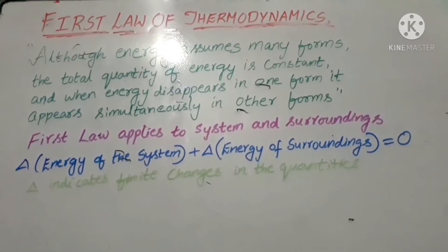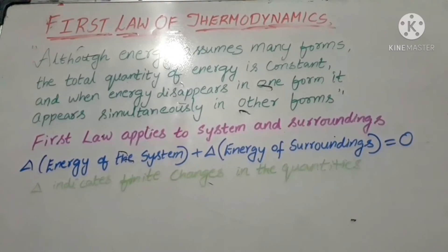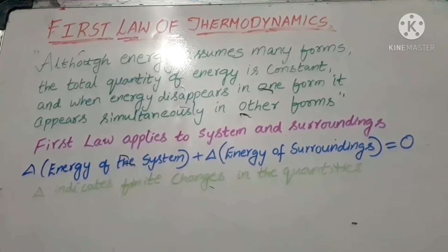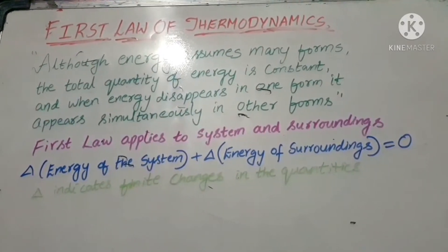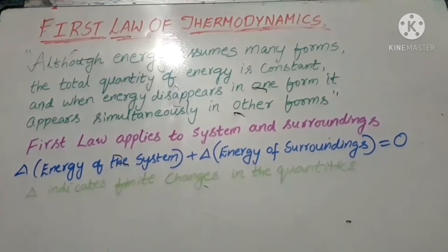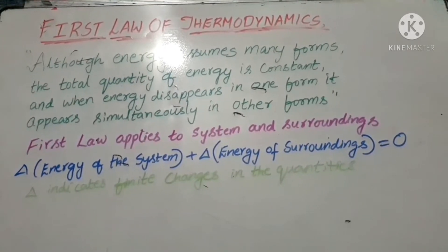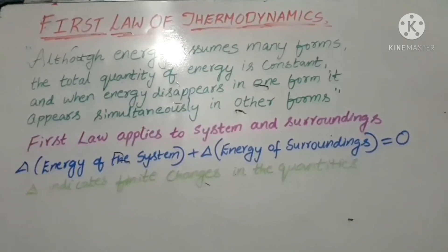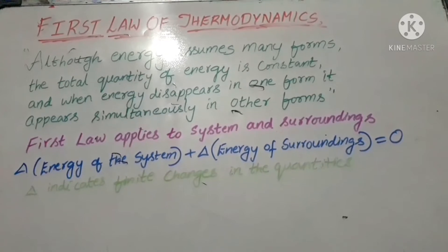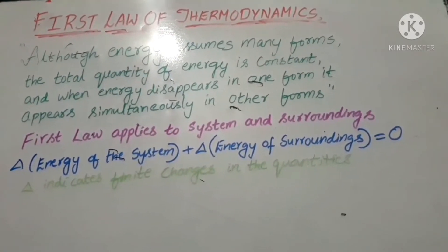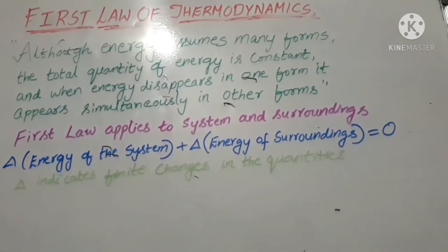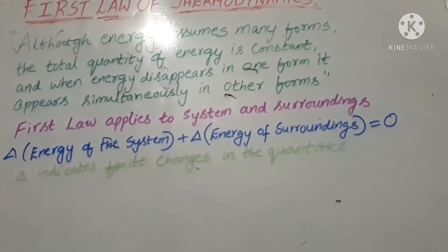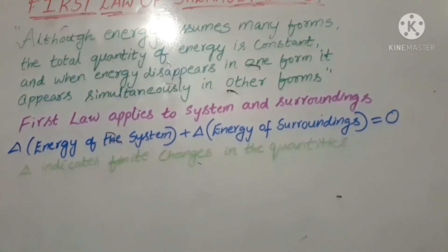Now we look at the first law of thermodynamics, which is a basic law in chemical engineering thermodynamics. The definition states: although energy assumes many forms, the total quantity of energy is constant, and when energy disappears in one form it appears simultaneously in other forms. Energy can be created in different forms but the total quantity is constant.